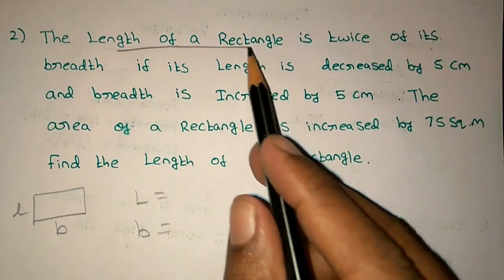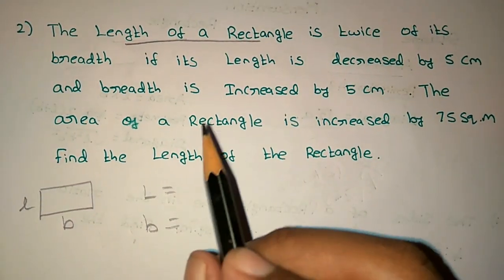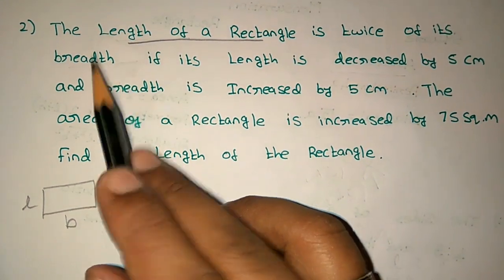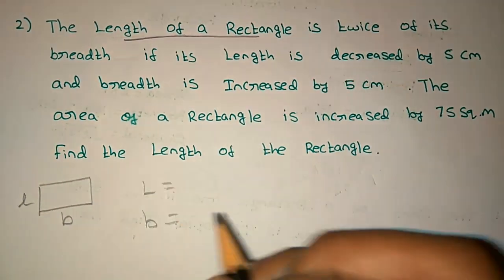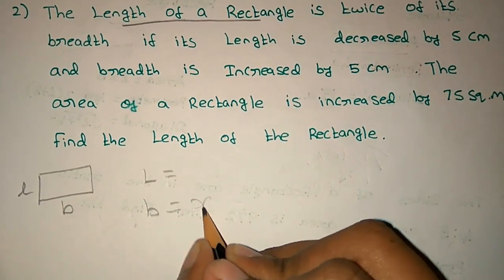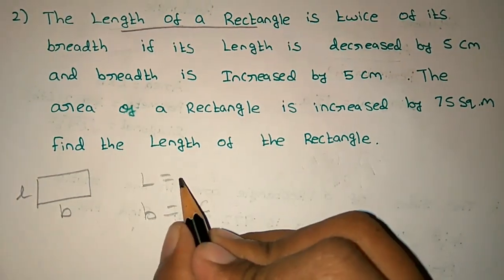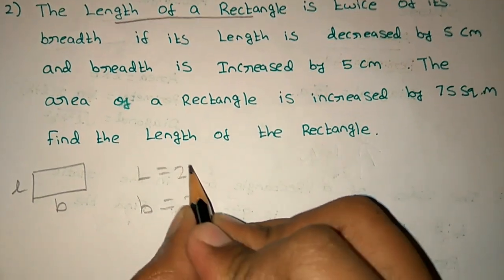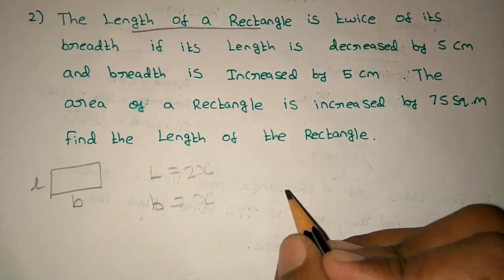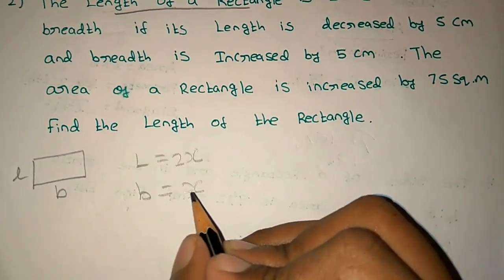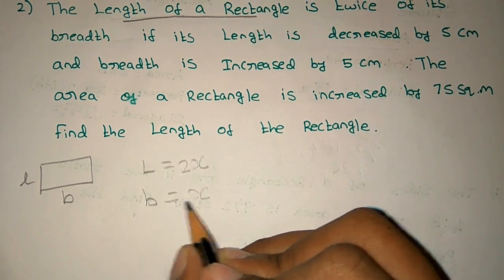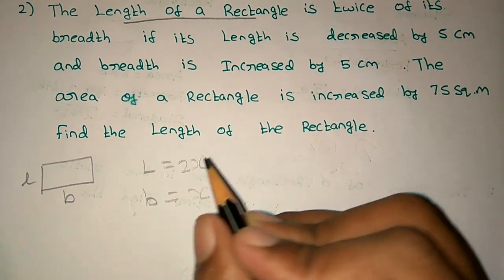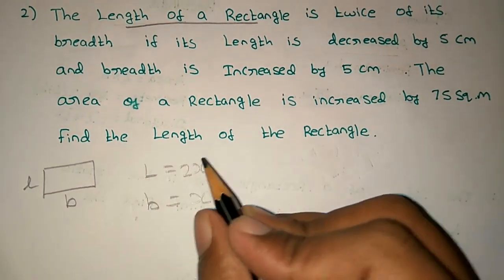Next problem: the length of a rectangle is twice its breadth. So if breadth is x, the length is 2x. For example, if breadth is 5, then length is 10, which is 2x.